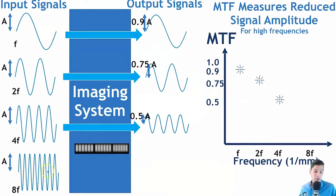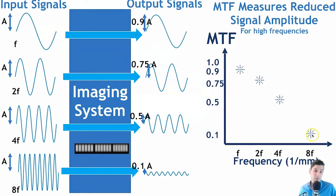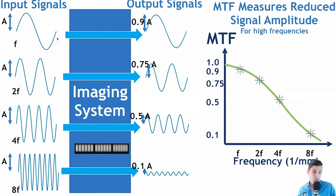These data points allow us to construct an MTF curve. In reality, we measure these things differently — we use the Fourier transform of something such as the Fourier transform of a point or a line to actually measure the MTF. The key concept is that MTF measures the reduction of signal amplitude for higher spatial frequencies.